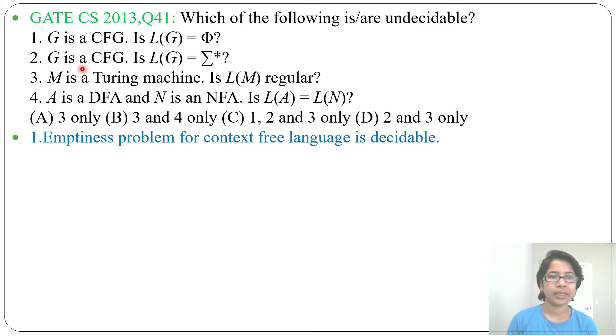Statement 2: G is a context-free grammar, is L(G) = Σ* (universal language)? This is the completeness problem, and completeness for context-free grammars is undecidable. It's asking if a grammar generates all strings from the alphabet - this is undecidable.